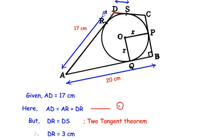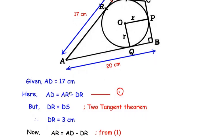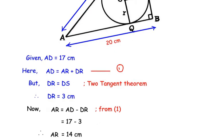Now that we have DR = 3 cm, we can find AR using equation 1. AR = AD − DR = 17 − 3 = 14 cm.